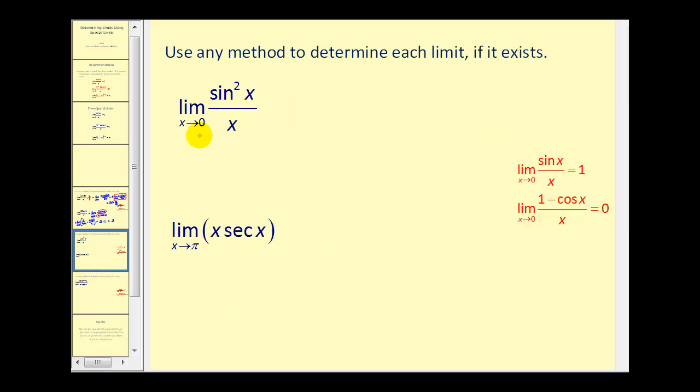Next, we have the limit as x approaches zero of sin²(x) divided by x. Again, looks very similar to what we have here except now we have sin²(x). Remember that sin²(x) is the same as sin(x) times sin(x). So again, we see that special form. Let's go ahead and rewrite this one more time. This is the same as the limit as x approaches zero of sin(x) times sin(x) divided by x.